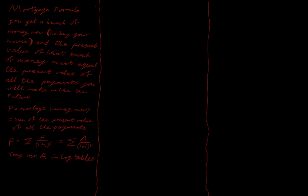We're going to have a quick chat about the mortgage formula that you're required to be able to derive. When we're looking at a mortgage, we get a bunch of money now — the money you're going to buy your house with — and the present value of that money you get must be equal to the present value of all of the payments you're going to make in the future. For example, you might get a mortgage for 200,000 and for the next 20 years you might be paying 15,000 a month, and the present value of all of those future payments has to be equal to the 200,000 you get right now.